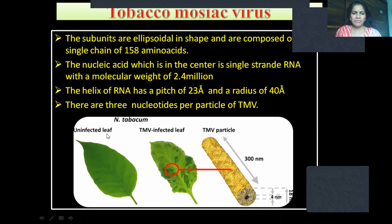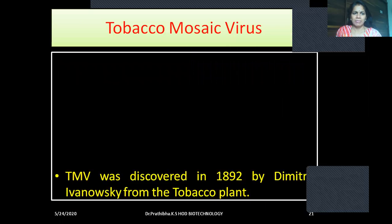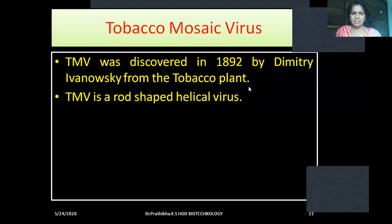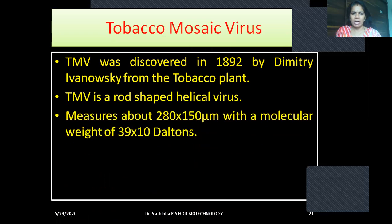There are three nucleotides per particle of tobacco mosaic virus. Here in this picture representation, you can see uninfected leaves and tobacco mosaic virus infected leaves. Here you can also see the tobacco mosaic virus particle, which is of 300 nm. Tobacco mosaic virus was discovered in the year 1892 by Dimitri Ivanovsky from the tobacco plant. TMV is a rod-shaped helical virus.